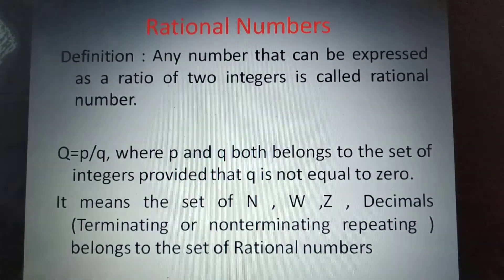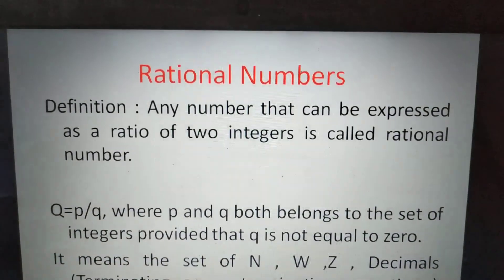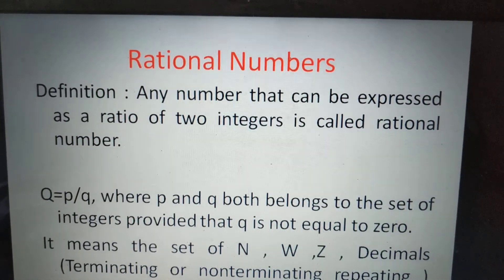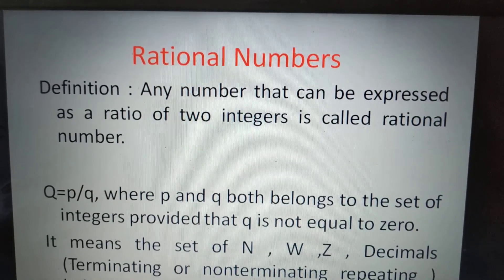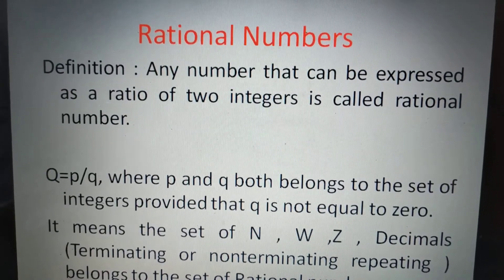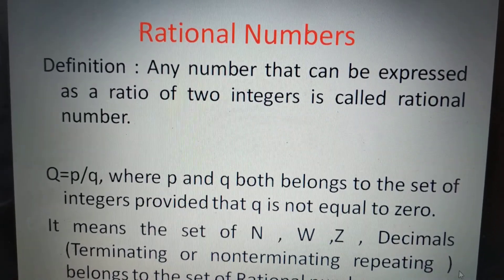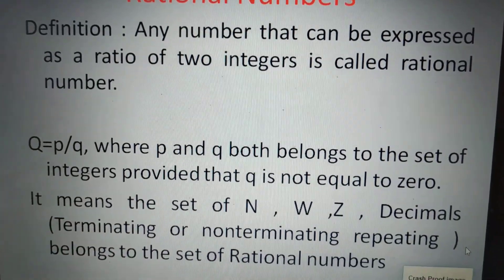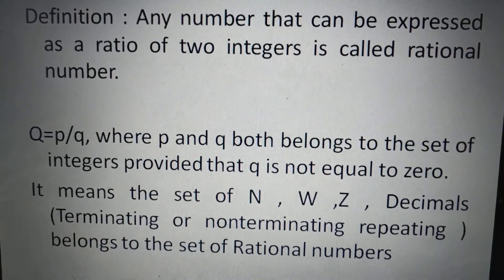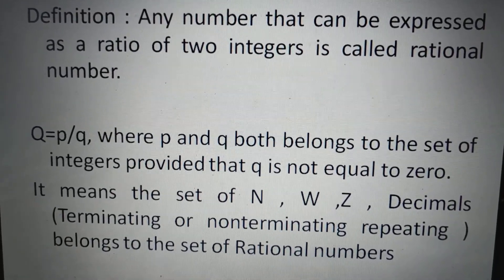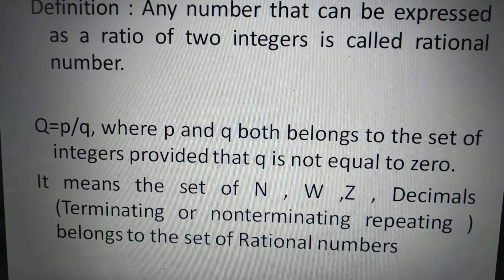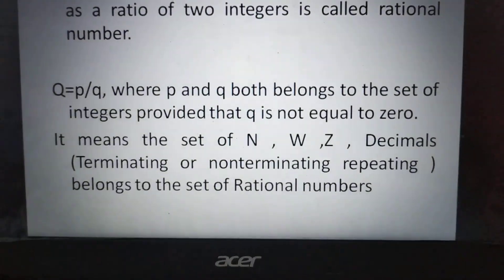Now let us understand the definition of rational numbers. Any number that can be expressed as a ratio of two integers is called a rational number. The rational number is represented by the letter Q. That is, Q = p/q, where p and q both belong to the set of integers, provided that q is not equal to 0. This means natural numbers, whole numbers, integers, and decimals which are either terminating or non-terminating repeating decimals belong to the set of rational numbers.